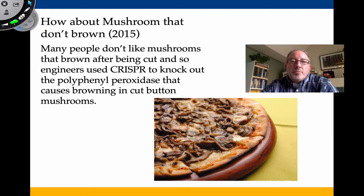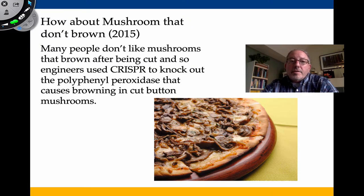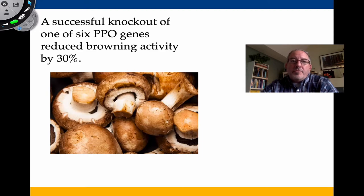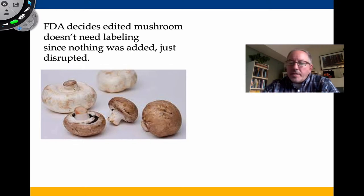Mushrooms that don't brown — this came out in 2015. People don't like mushrooms that look brown in the grocery store. Engineering CRISPR to knock out the sequence of polyphenol peroxidase that causes browning resulted in a successful knockout that reduced browning activity by 30%. Interestingly, the FDA decided these edited mushrooms don't need additional labeling since nothing was added — the gene was simply disrupted, so it's not considered a transgenic organism.